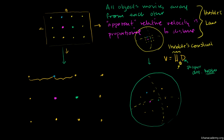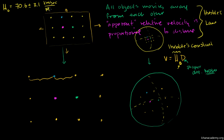To do a little bit of math on how fast things are actually moving apart: the current Hubble constant is 70.6 plus or minus 3.1 kilometers per second per megaparsec. There is some error to our actual measurements. Remember, a parsec is roughly 3.2 to 3.3 light years.